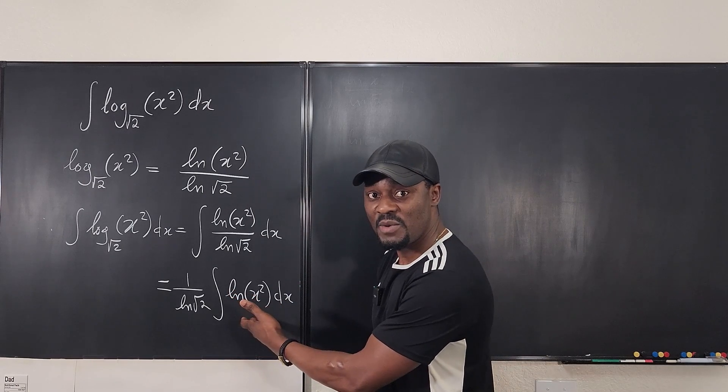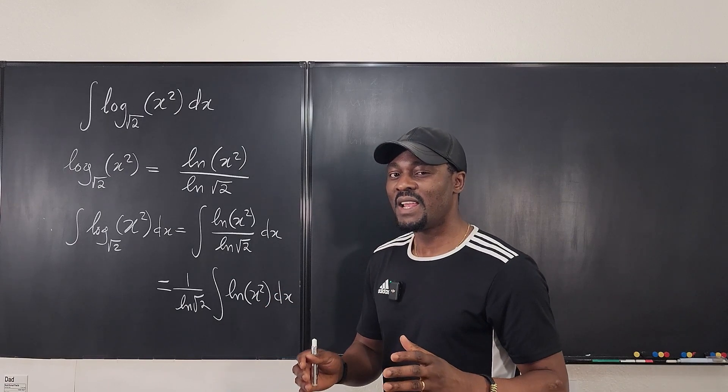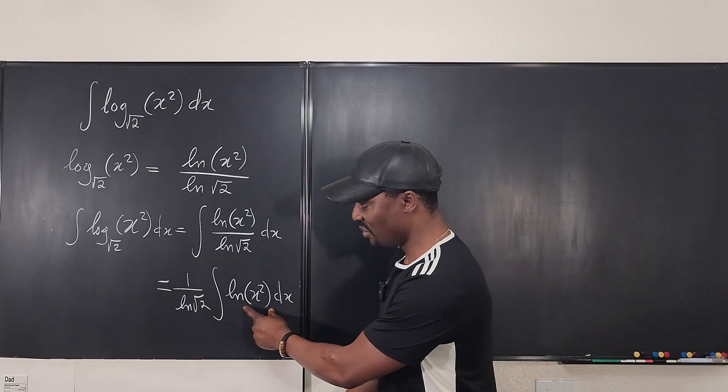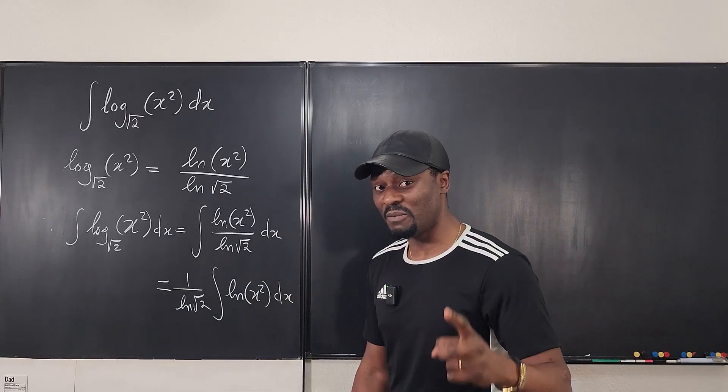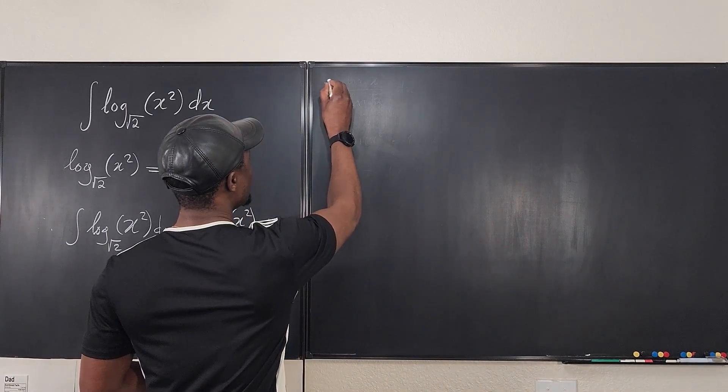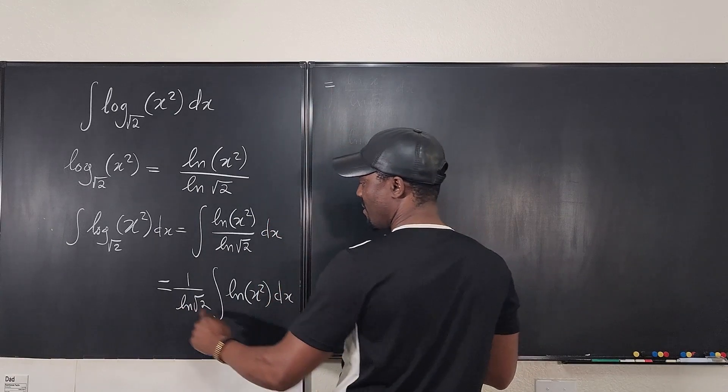Every time you get a polynomial as the argument of a natural log function, you want to treat it as a product. You want to treat this as a product and then use integration by parts. I'm going to say that this is equal to this line.